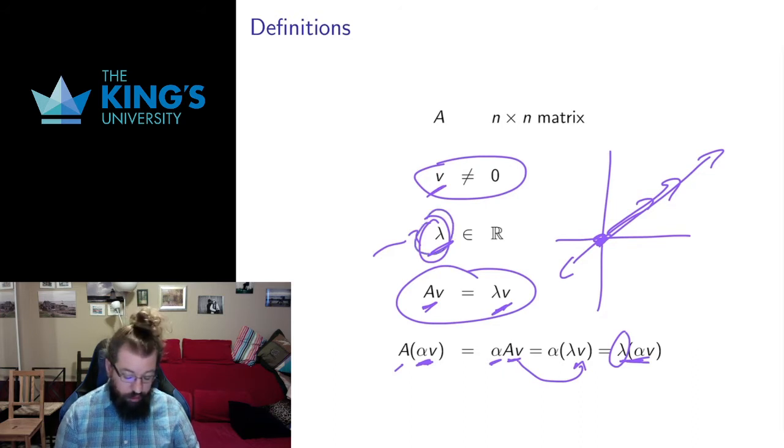A matrix is going to have some finite number of eigenvalues, and each eigenvalue is going to have infinitely many eigenvectors associated to it. We'll talk more about how to find those and describe those in future videos.